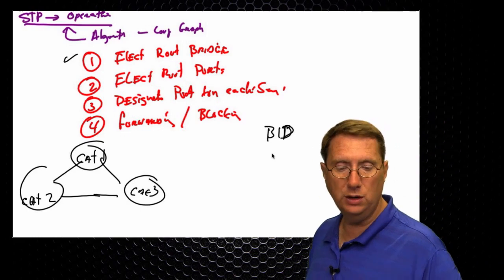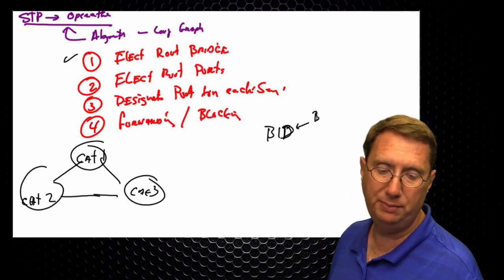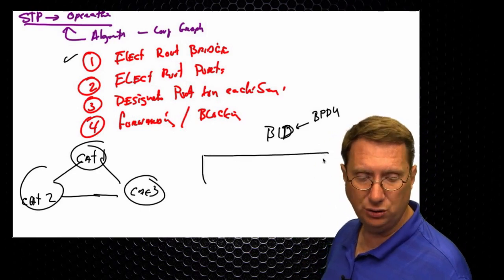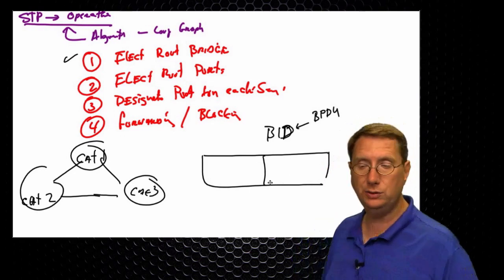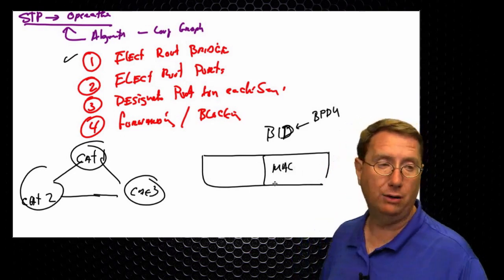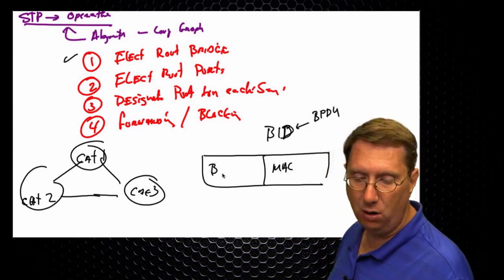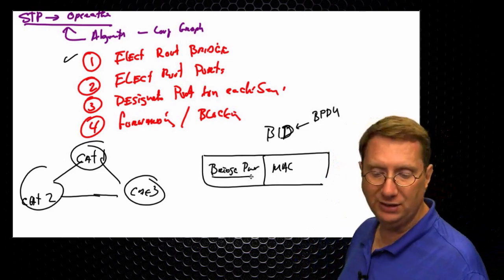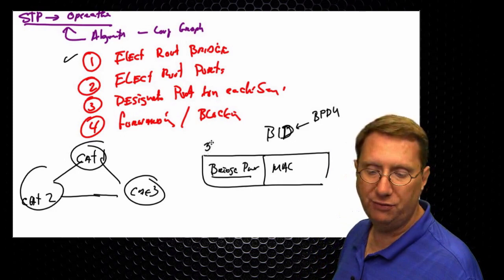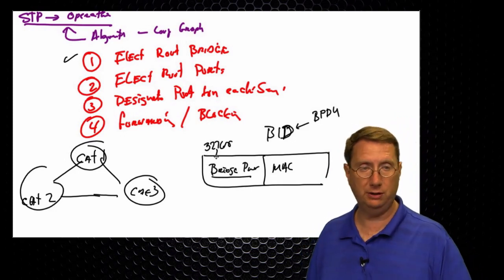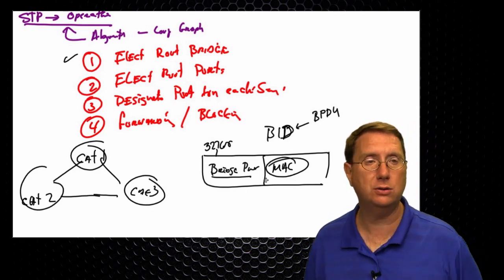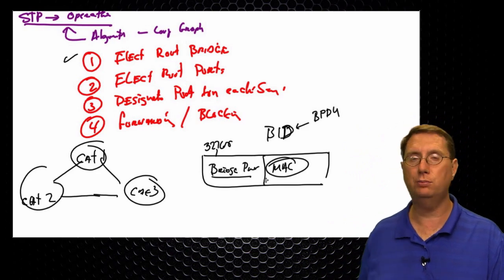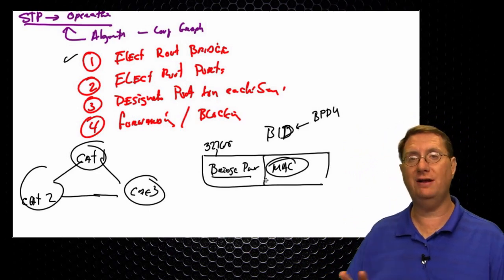If we leave everything as-is, we're going to have a default bridge priority of 32,768 for every switch. That means the tiebreaker to determine who wins the election is going to be the MAC address. The numerically lowest MAC address is going to be picked as the root bridge. The root bridge is in charge of everything from that point. Now, with our root bridge established, every interface on the root bridge is going to be in designated mode.